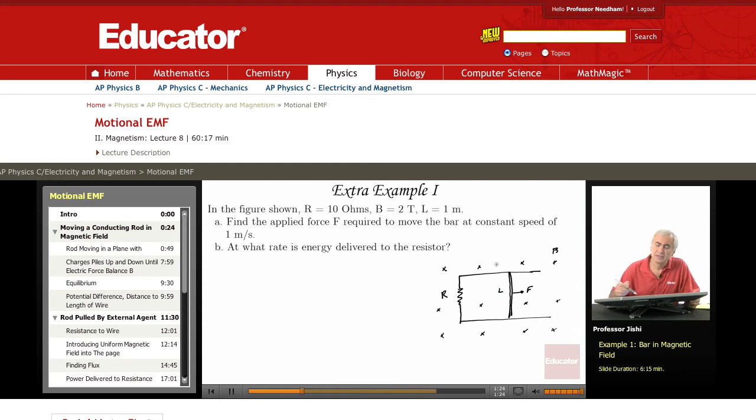The induced EMF, as we have seen, is L·B·V where L is the length, B is the magnetic field, and V is the speed of the bar. This is a motional EMF.